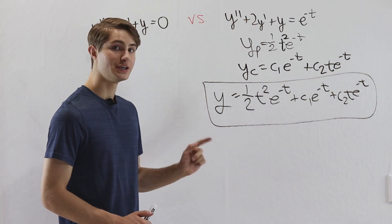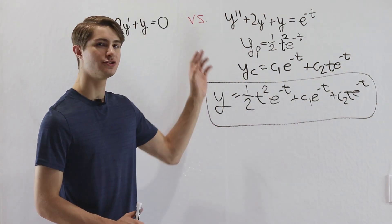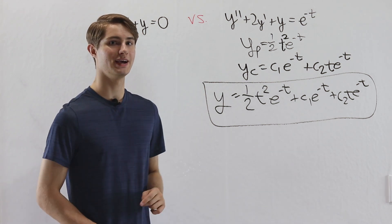So remember, anytime you're doing undetermined coefficients, if the answer should work and it's not working, just multiply by t.